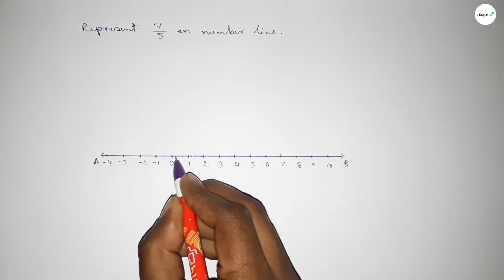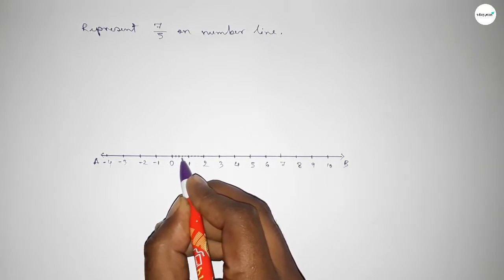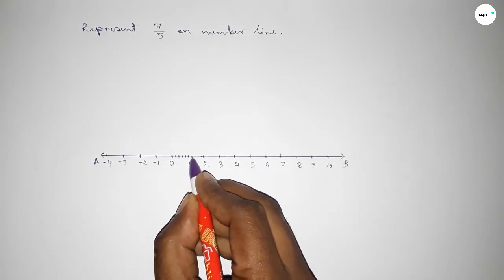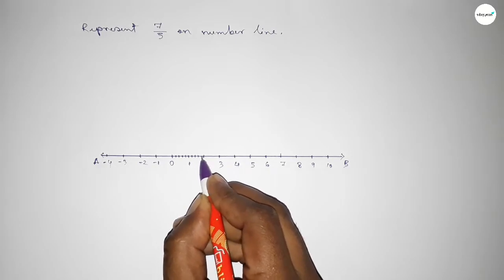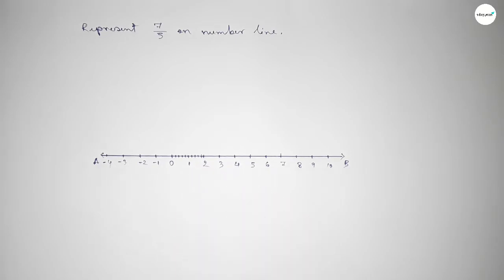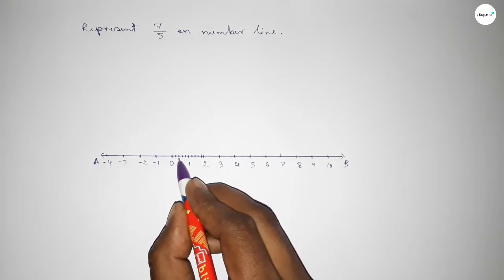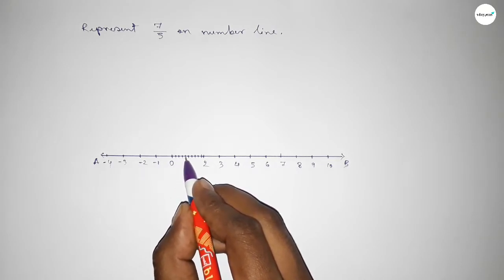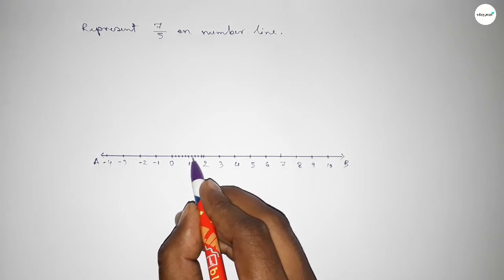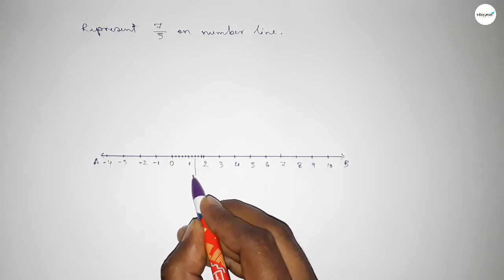Now marking the numbers with deep color to understand perfectly. So this is 1 over 5, 2 over 5, 3 over 5, 4 over 5, 5 over 5, 6 over 5, 7 over 5. So this is 7 over 5 on the number line. Therefore OP equals 7 over 5 unit.